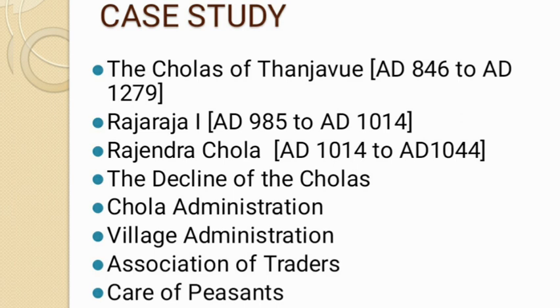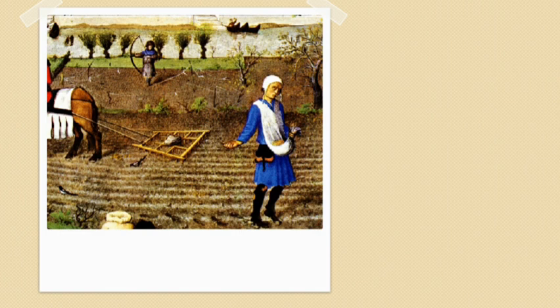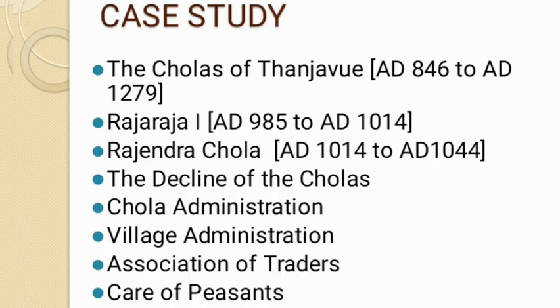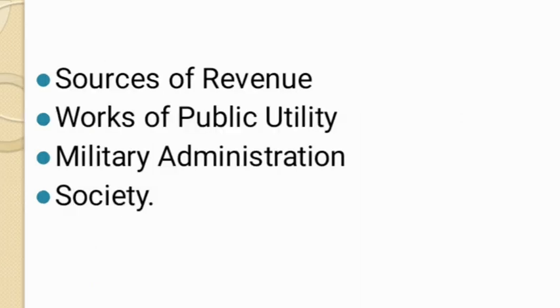Next is care of peasants. Chola kings took good care of farmers. If farmers' crops were ever destroyed, the king did not collect any tax from them. They built canals and tanks for peasants so that crops would always have water. They also cleared forests to build buildings and roads. In many regions, two crops per year were also grown.